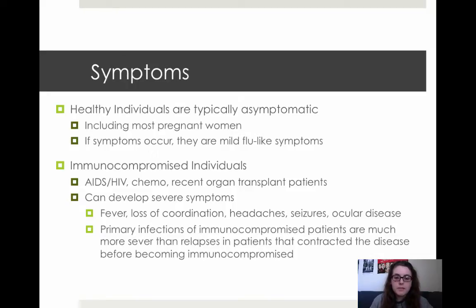In immunocompromised individuals, such as those with AIDS or HIV, those undergoing chemotherapy treatment, and those who have recently received an organ transplant, those individuals can develop severe symptoms, including high fevers, loss of coordination, headaches, seizures, and even an ocular disease where there are lesions on the eye. Immunocompromised patients who were infected before they became immunocompromised typically have less severe symptoms, because when they become immunocompromised, it's simply a reactivation of the pathogen rather than an initial infection.